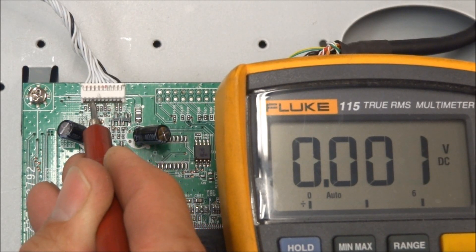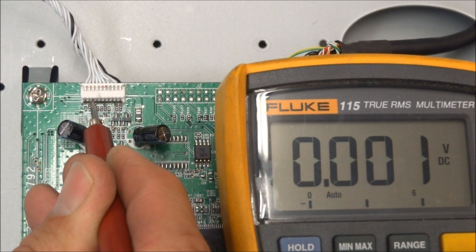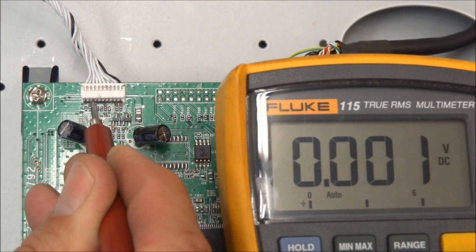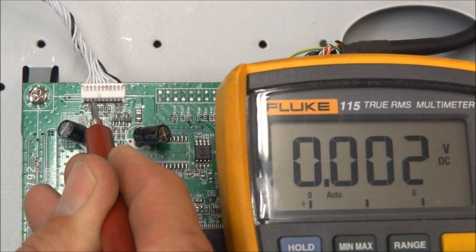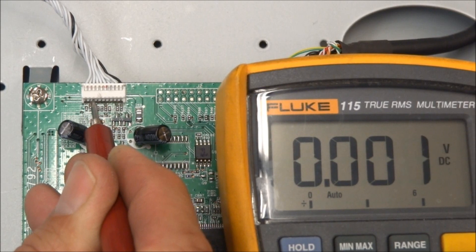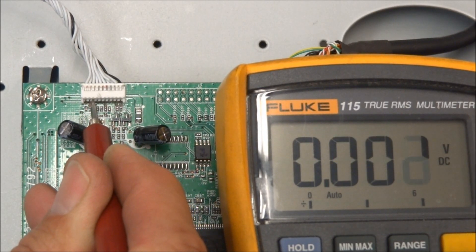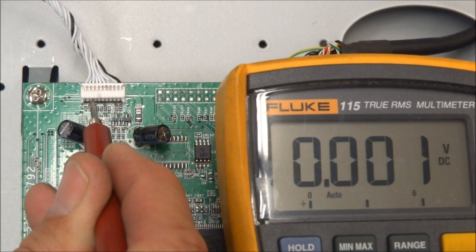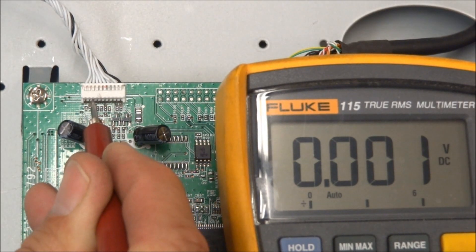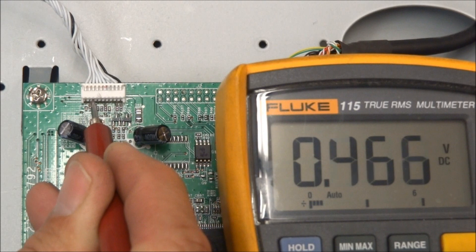Pin number 8 is a key scan line, and so as I press various buttons on the keypad, the physical buttons, you can see some keys make a difference. Now there's two key scan lines, 8 and 9 are both key scan lines. So as I press source, you can see it goes to .466 volts.